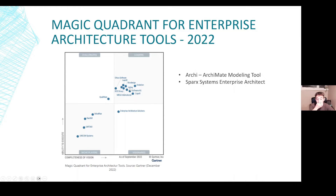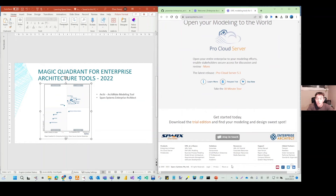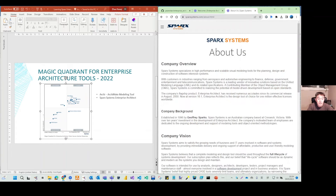BiZDesign also has business design involvement, and we've had a chance to talk with them before. Mega is also an enterprise architecture tool with modeling capability. All those tools inside this diagram are categorized as enterprise architecture tools. So the first question for me is: where is Sparks Systems Enterprise Architect? Because the name is Enterprise Architect, but it's not showing here. Possibly we will see it in the 2023 report.